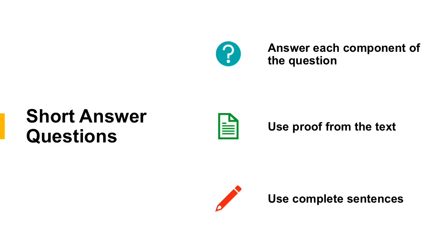Make sure you use proof from the text. Always go back and say, "I know this is the answer because in paragraph three, they are talking about such and such." Make sure you're using proof from the actual text. All the paragraphs in the selections you will read are numbered, so you can use that to help you refer back to the proof. You can even give quotes as well.